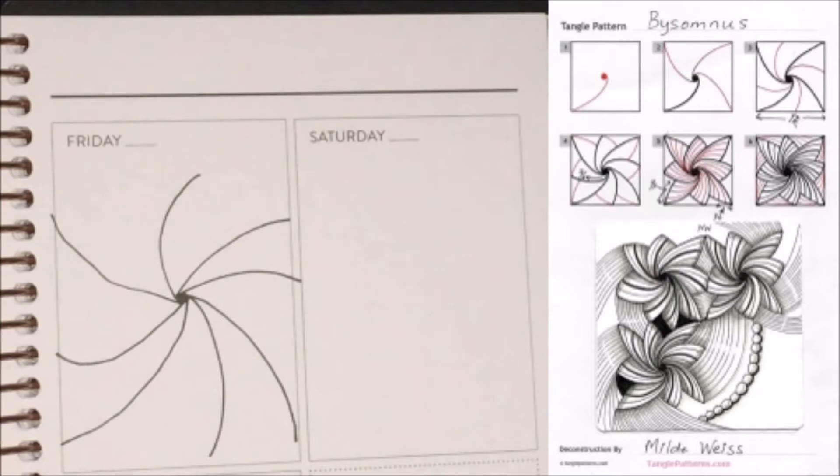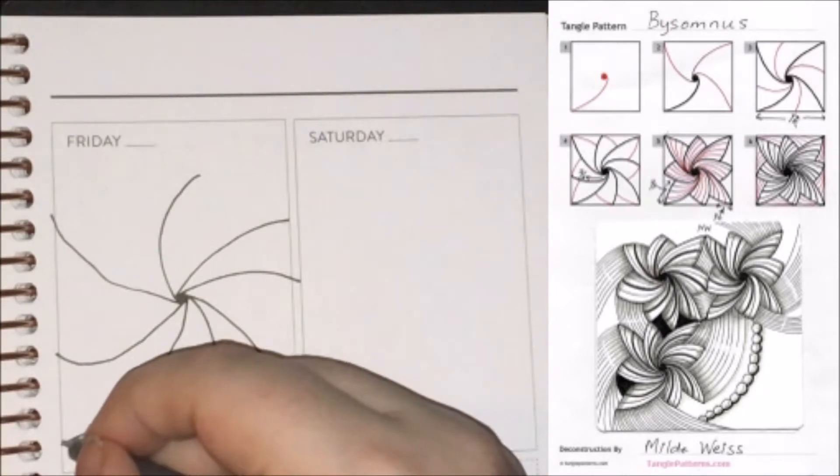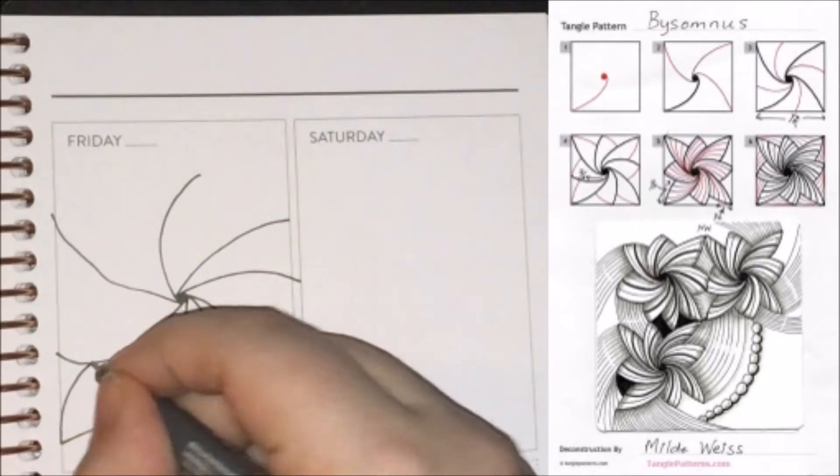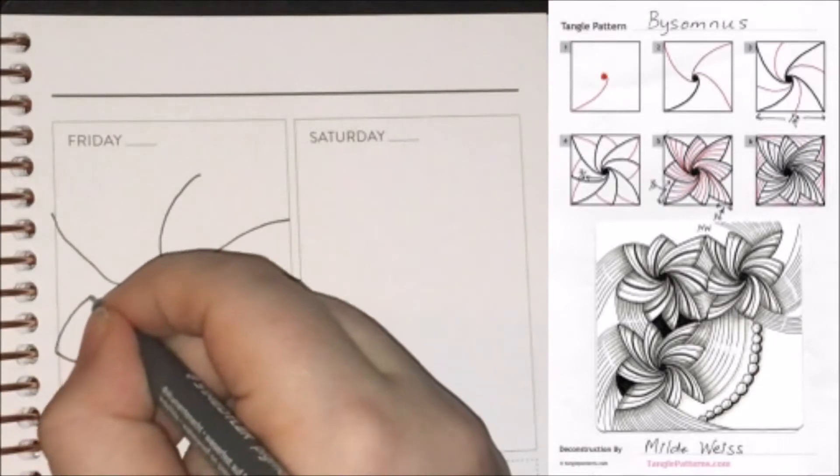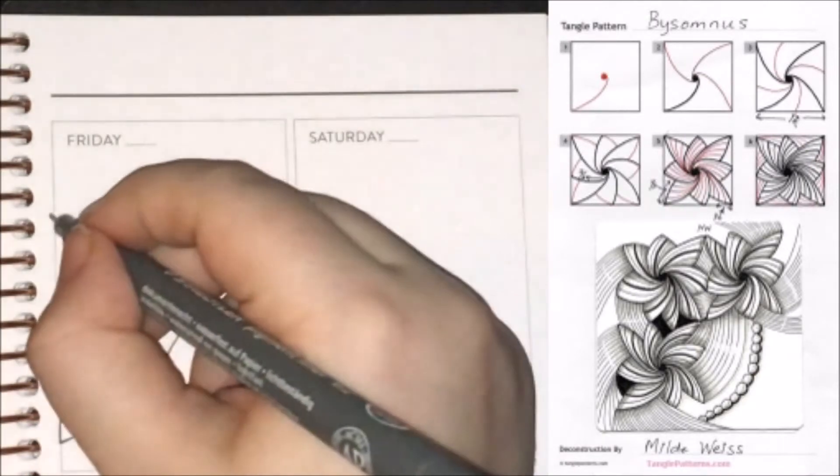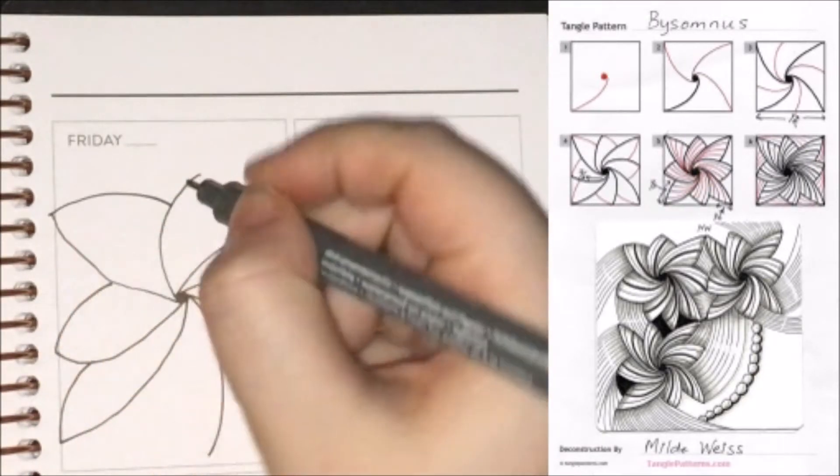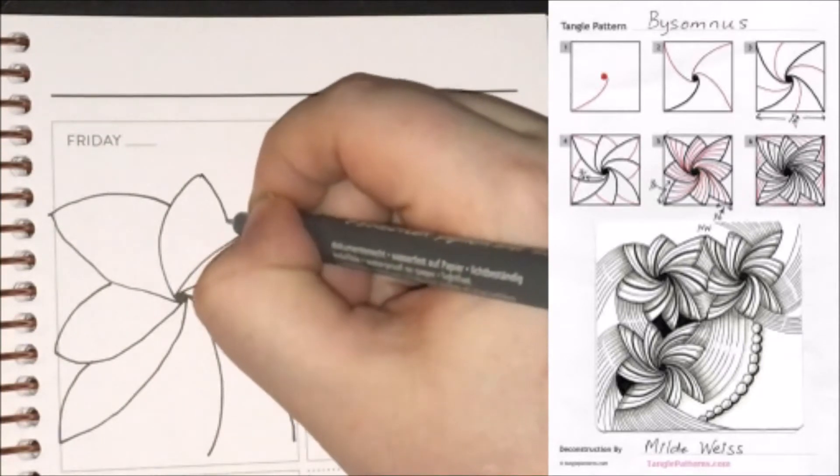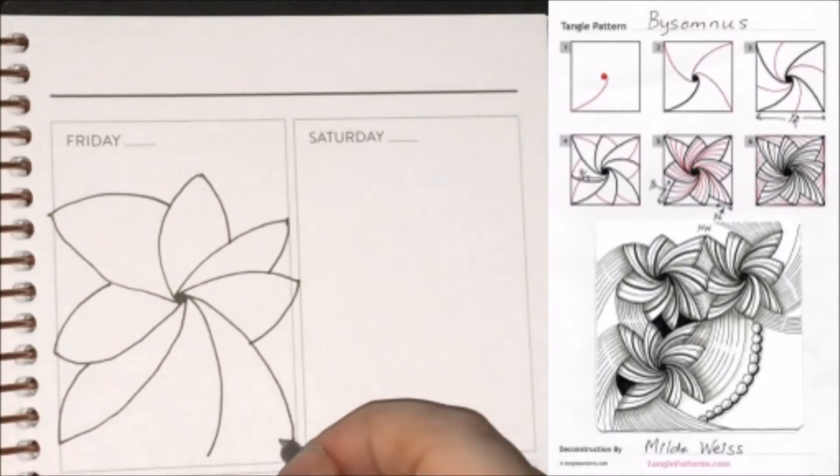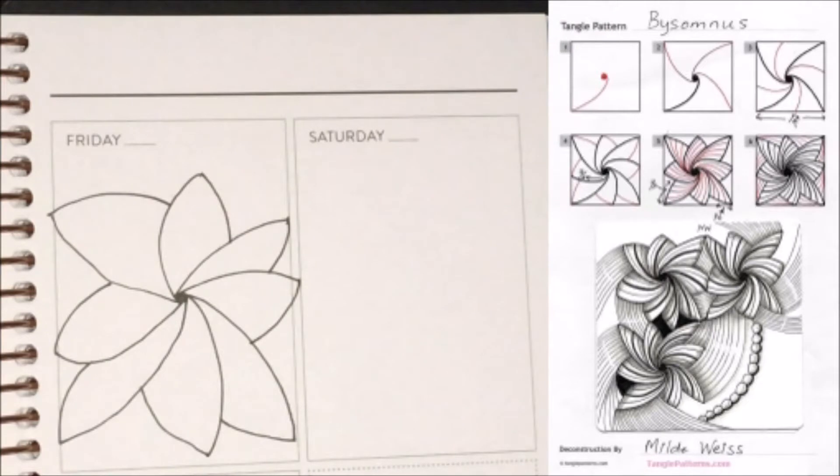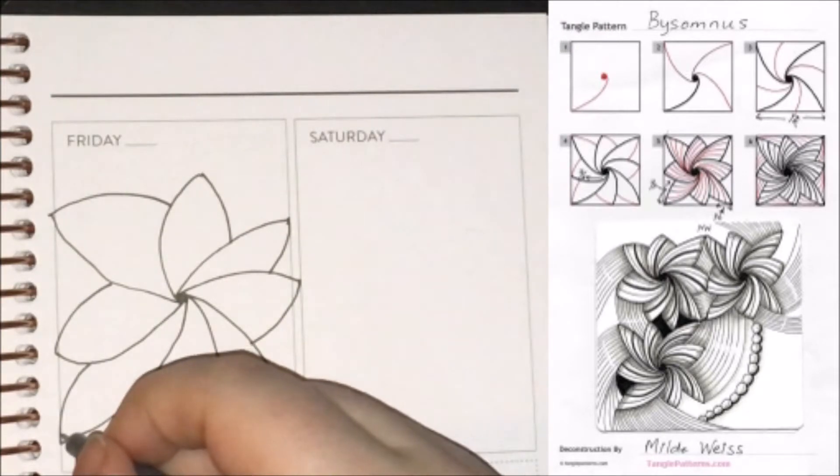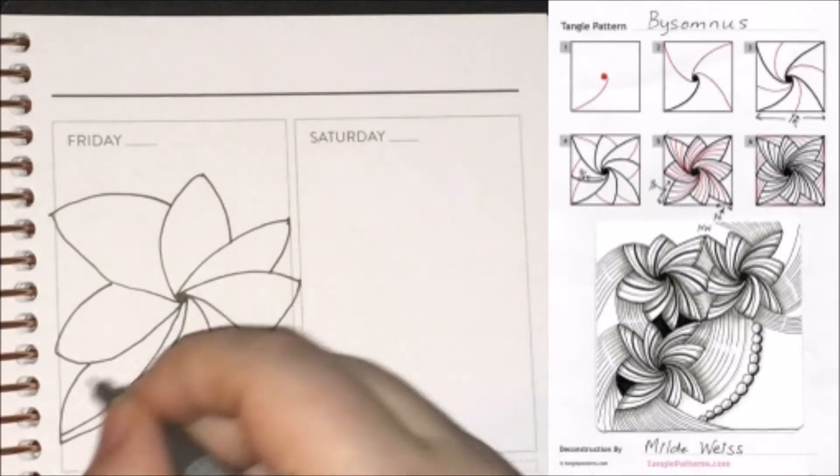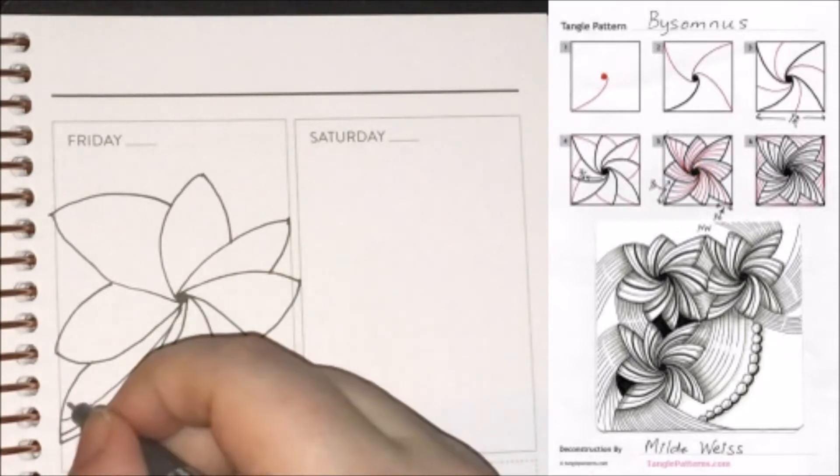And then from each endpoint, we're just going to draw a curve that comes back in and connects it to the curve on its right.